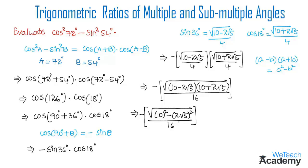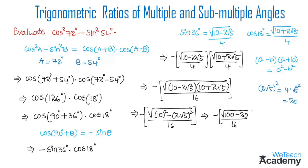Now let us find the value of (2√5)². We can write (2√5)² = 2² · (√5)² = 4 · 5 = 20. Substituting, we get -√(100 - 20) / 16, which implies -√80 / 16.